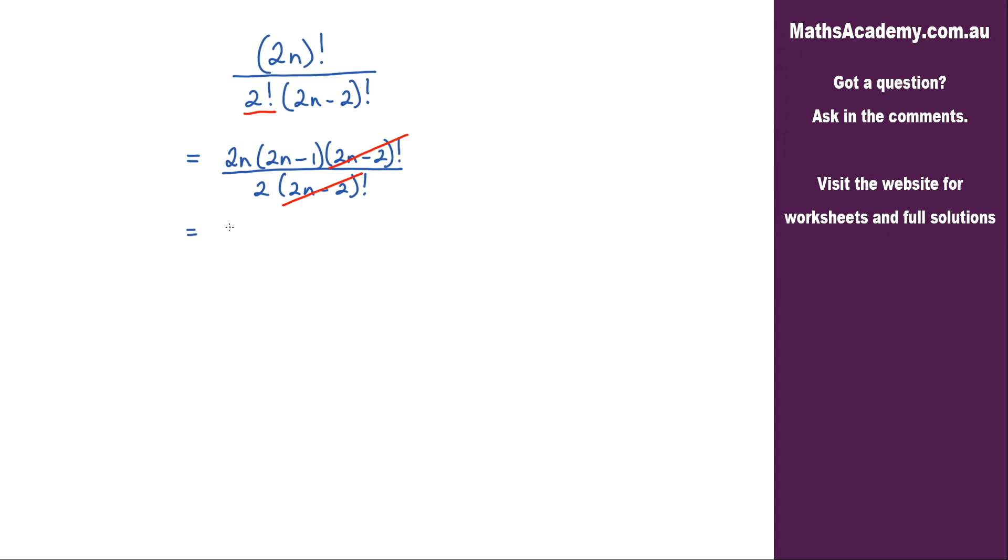So we've got 2n times 2n minus 1 all over 2, and you should notice that the 2s will cancel which leaves me with n multiplied by 2n minus 1.